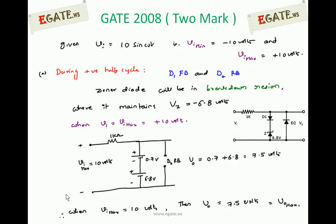In our problem, the input voltage is given as 10 sin(ωt) and we need to calculate the maximum positive and maximum negative output voltages. The maximum positive output voltage occurs when the input is at its positive peak, and the maximum negative output occurs when the input is at its minimum. For 10 sin(ωt), Vi minimum is -10V and Vi maximum is +10V, where Vm = 10V.